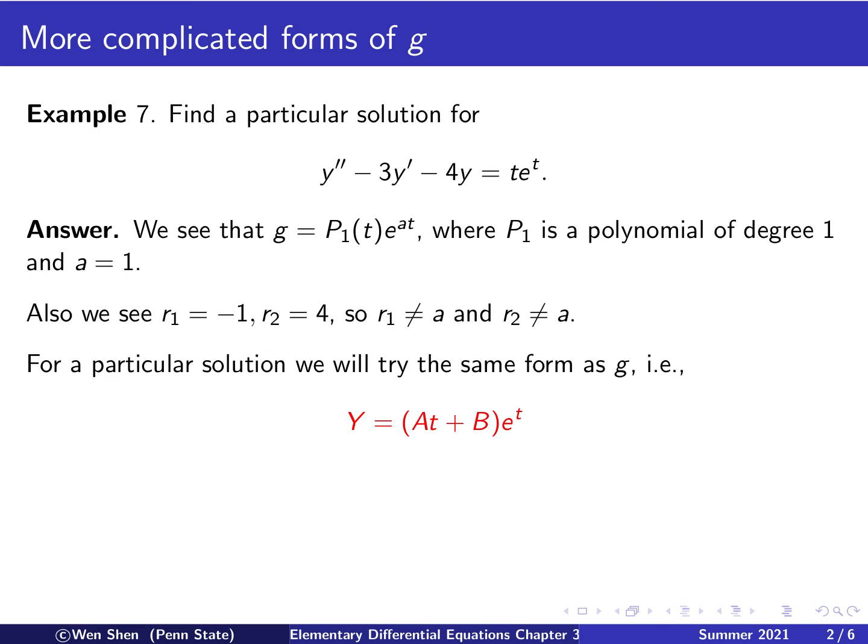In this case, we can try to find a particular solution with the same form as g. The form of g is a polynomial of degree 1 multiplied by an exponential function. So we write Y = (At + B)e^t, where A and B are two coefficients to be determined, and e^t because the rate a is 1.